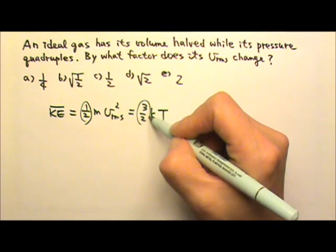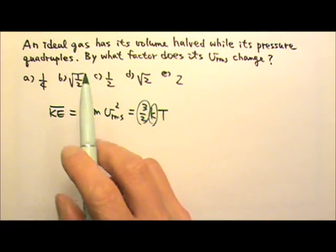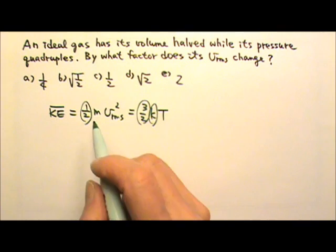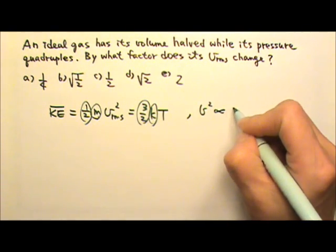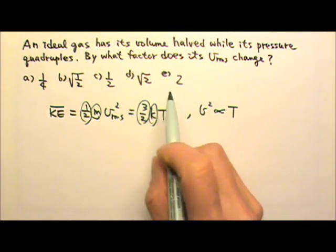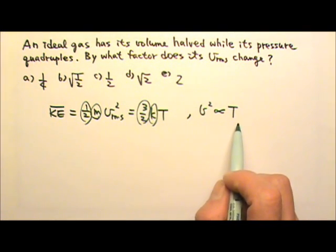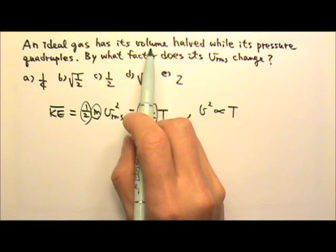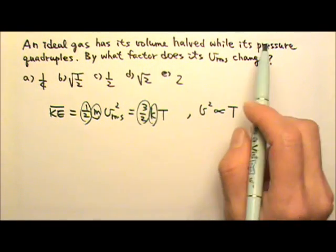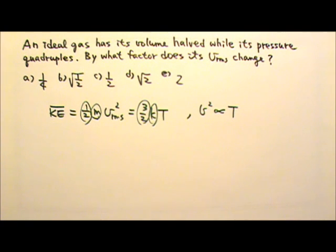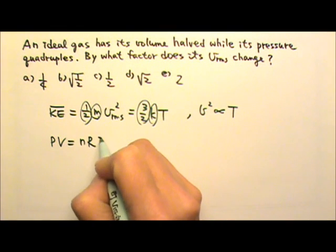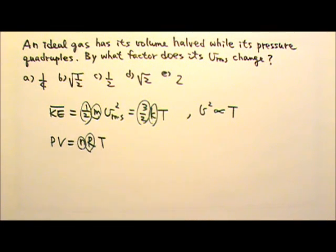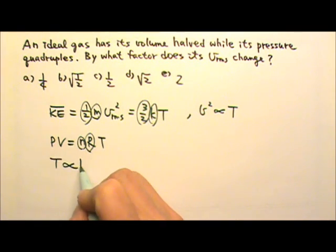One-half, three-halves, and k are always constants. Since it's the same gas, m is also constant, which means v squared is proportional to temperature. The temperature is not given, but we have information about volume and pressure. Using PV equals nRT, with n and R constant, temperature is proportional to p times V.